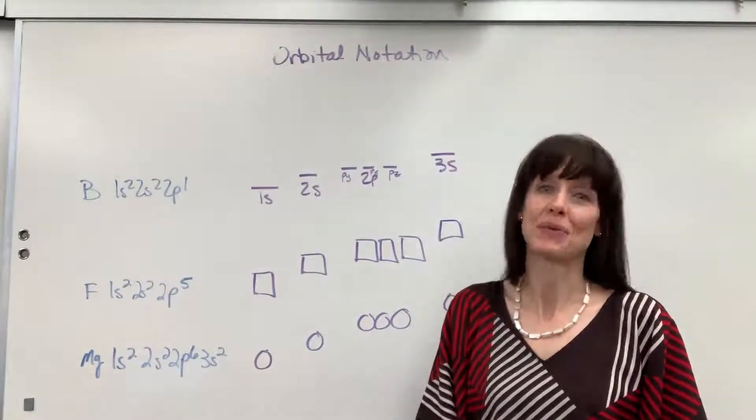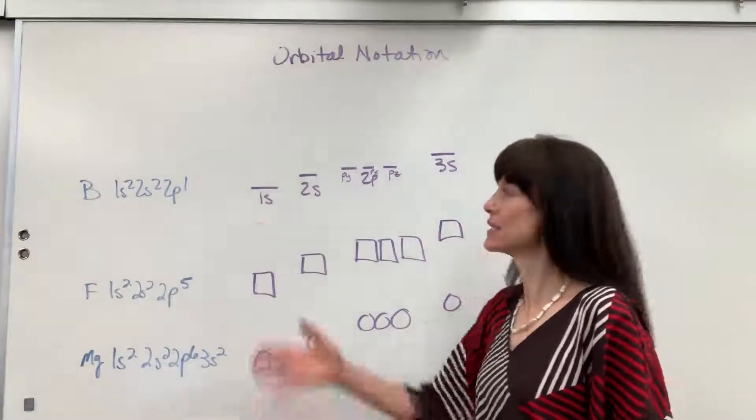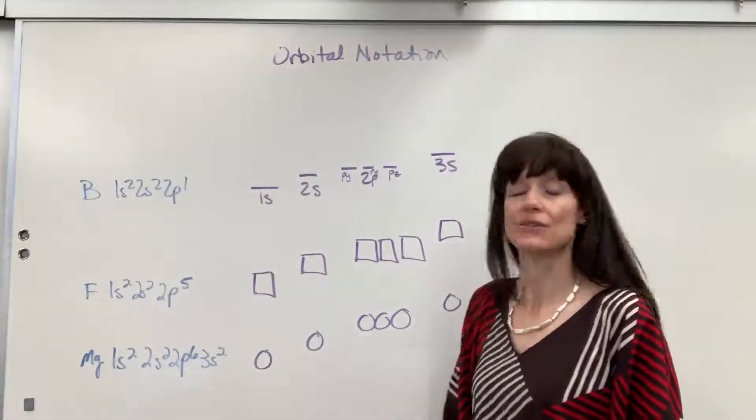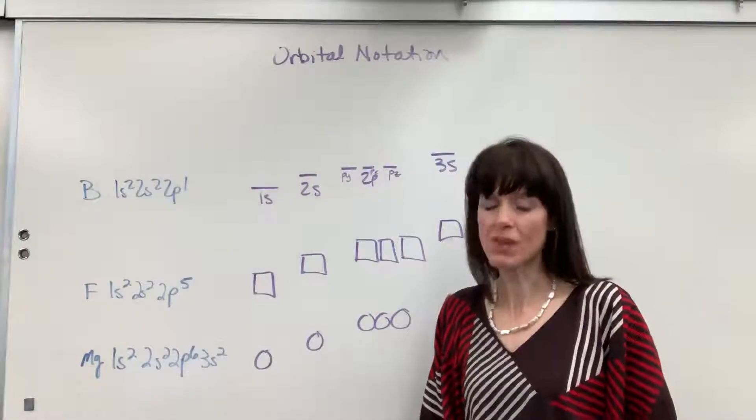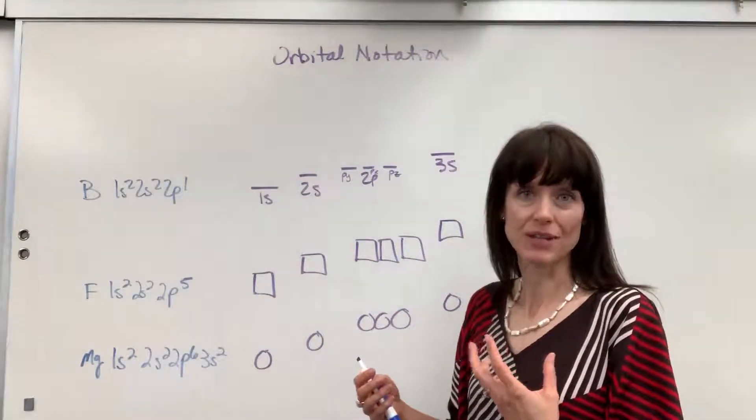Hi, we're going to talk about orbital notation. Orbital notation is an extension on the electron configuration. It gives us a picture, a little more pictorial, of the atom and where the electrons are located.